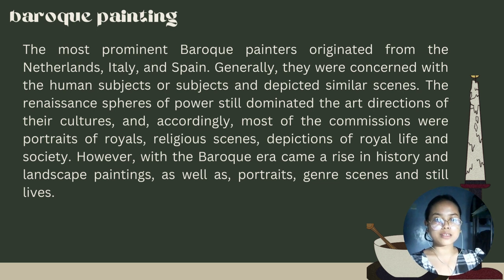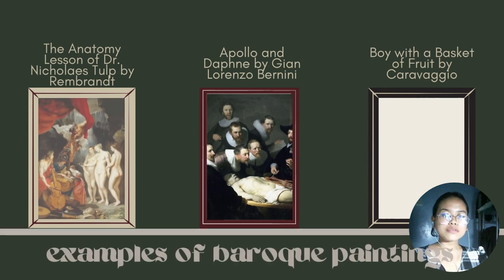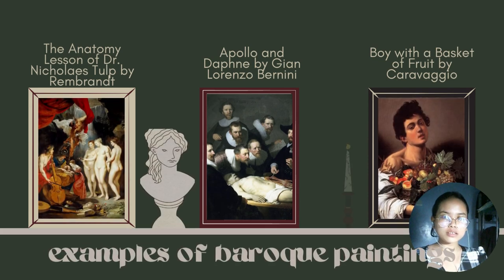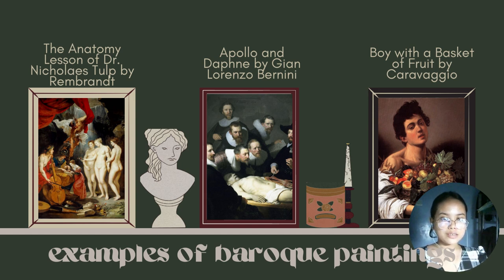Examples of baroque era paintings include: The Anatomy Lesson of Dr. Nicolaes Tulp by Rembrandt, Apollo and Daphne by Gian Lorenzo Bernini, and Boy with a Basket of Fruit by Caravaggio. Here is the list of examples of baroque paintings together with their painters.